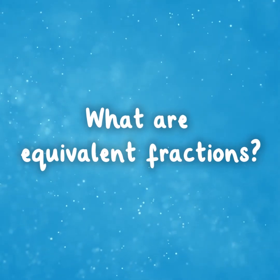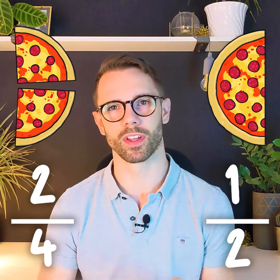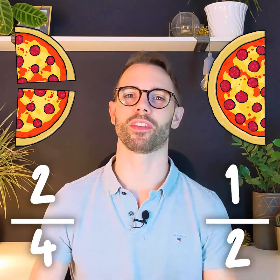Equivalent fractions are fractions that represent the same value even though they look different. For example, one half equals two quarters. Different numbers but they both have the same value.